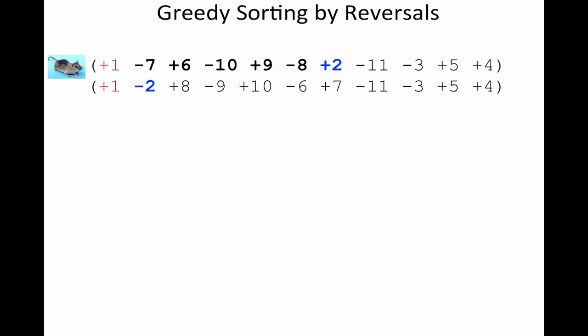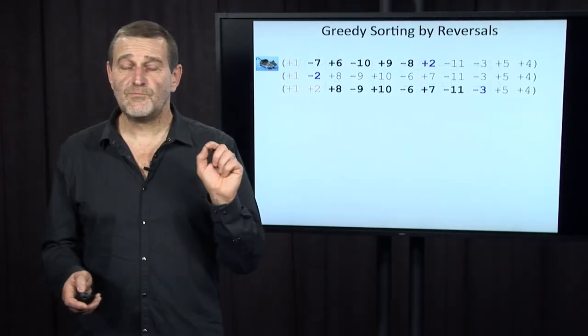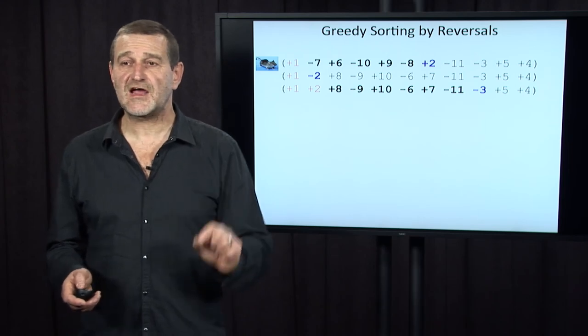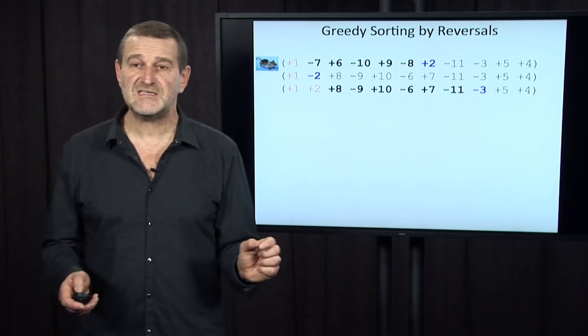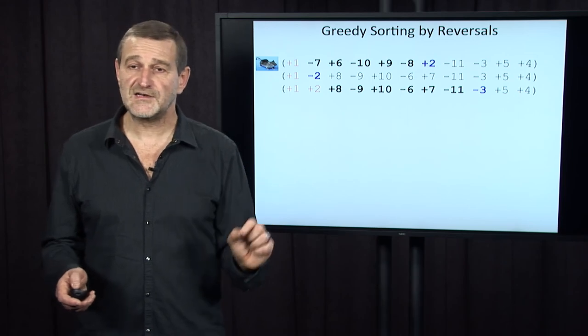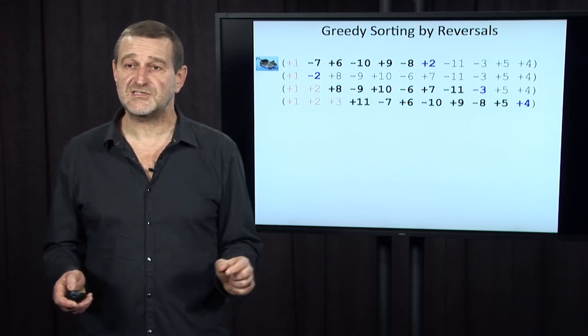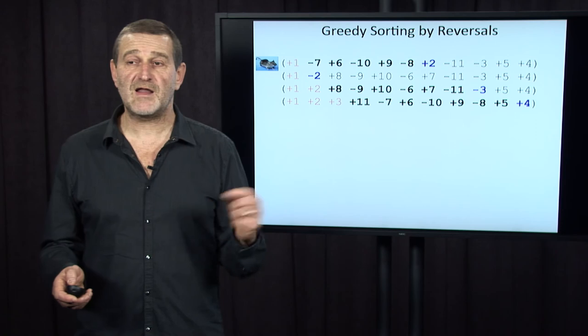We brought plus two at the right position, but now it has a wrong sign. Not a problem. We will reverse the sign using a short reversal right here. Now, we placed both plus one and plus two at the right position, but minus three is at the wrong position. Not a problem. We'll find a reversal that brings it to the right position.